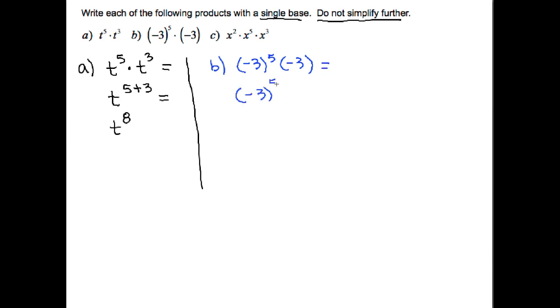And I'll add the exponents, which would be a 5 from the first factor, and this exponent here is a 1, so it's 5 plus 1. Multiply with the same base, again you add the exponents. So that's negative 3 to the sixth, and since we're writing with a single base, we're not going to simplify further, we're done.